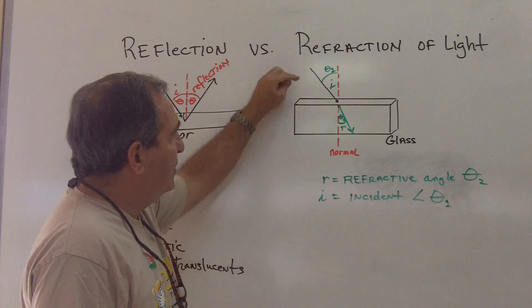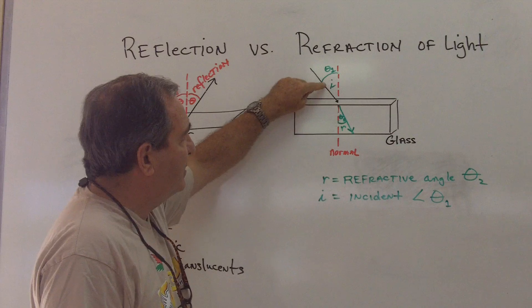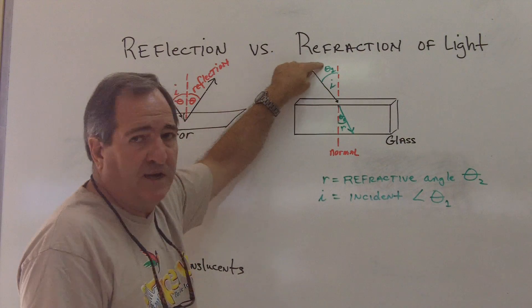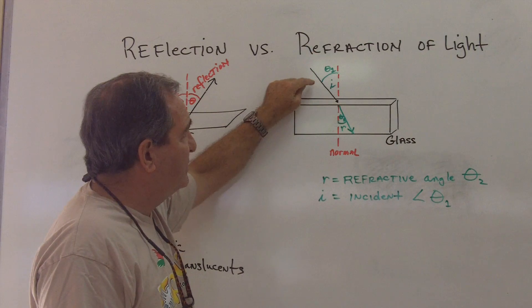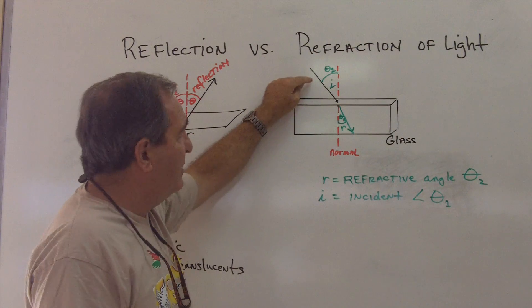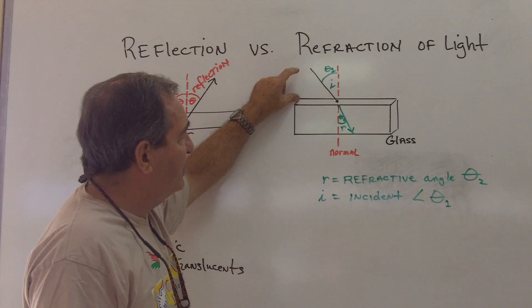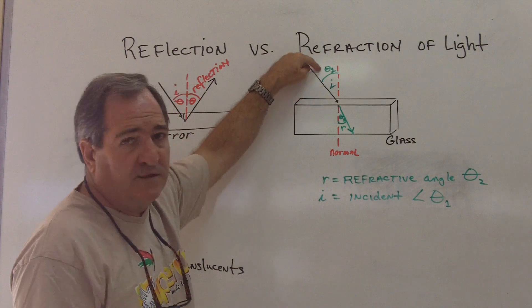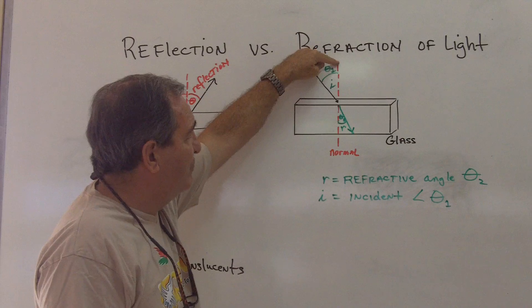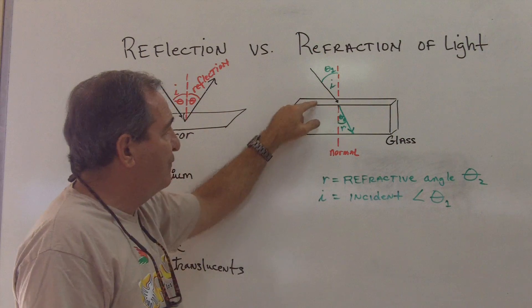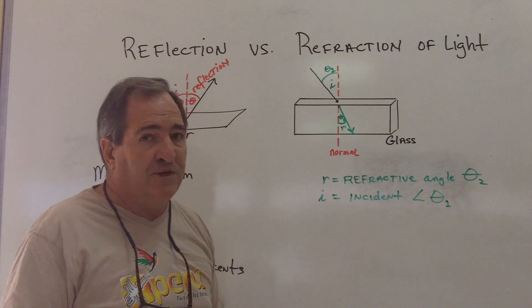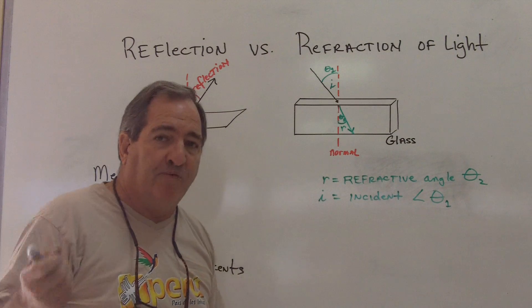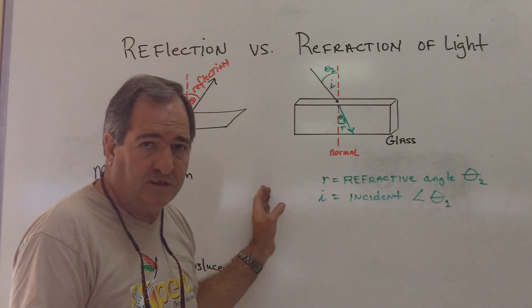Now, so if we have an incident angle in, again signified by the letter i, we have the first theta. The angle of incidence note is not from the parallel surface of the block. It's not this angle. It is from the normal. The normal is a perpendicular to the surface you're striking. This could be a curved surface and you'd have to draw a perpendicular at some point, which we won't discuss at this moment.